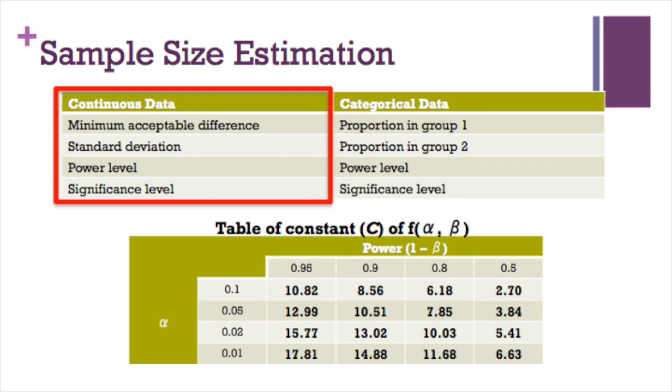For dependent continuous data, information required includes minimum acceptable difference, standard deviation, power level at 80 percent, and significance level at 0.05.